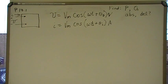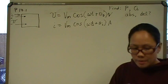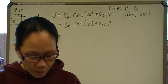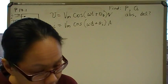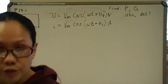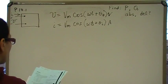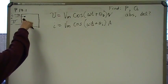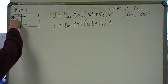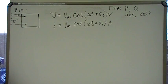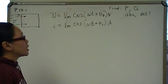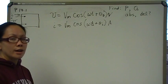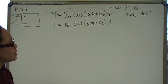Hi, you guys. This is problem number one from chapter 10 on instantaneous power. In this problem, we have a device — some unknown device — and at the terminals, we have positive current going into the positive terminal of this unknown device, going from positive to negative. What we're trying to find is real average power, and also the reactive component of the power.